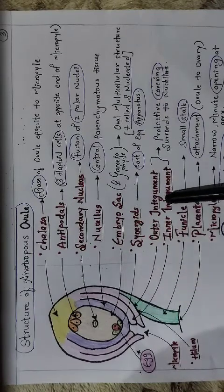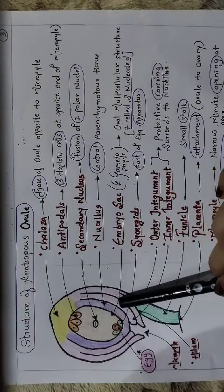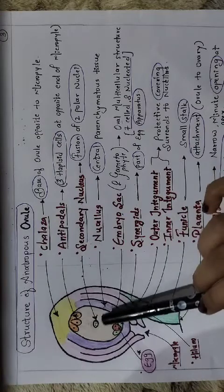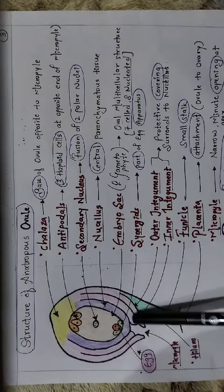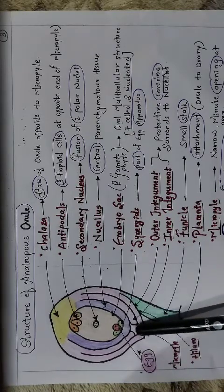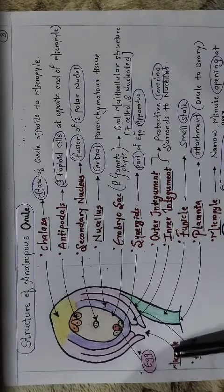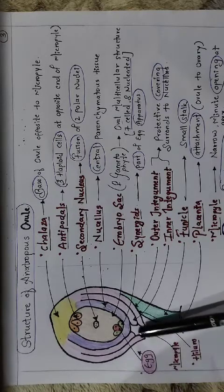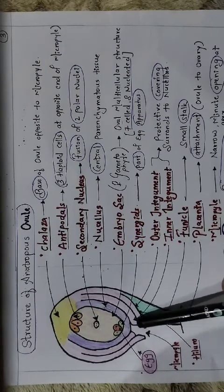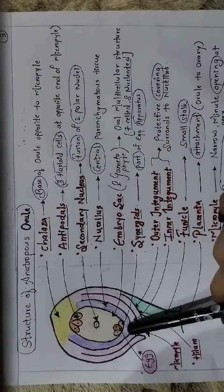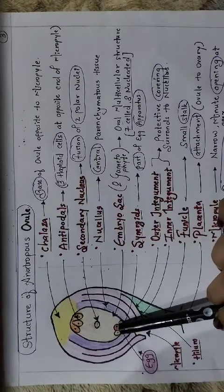The main function of the integument is to protect the inner nucellus and the embryo sac. The integument is not continuous — it is interrupted by a small channel or aperture called the micropyle. The main function of the micropyle is to act as a channel opening for the entry of the pollen tube, so the pollen tube can penetrate through this channel and reach the embryo sac where the egg is present.